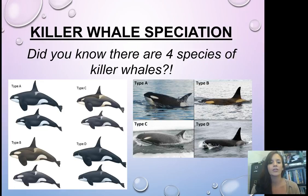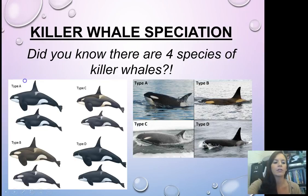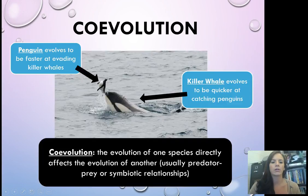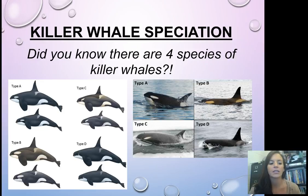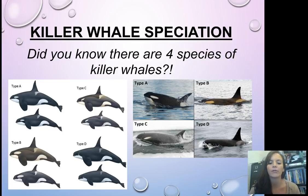So killer whale speciation in general — did you know that there are four species of killer whales? So if you look here, the version on the left hand is an illustrated version showing males and females. Males are obviously the larger of the two. Look at the colors and especially the patterns of the white marks. And then in the picture on the right, you'll see actual photos of these four different types of killer whales.